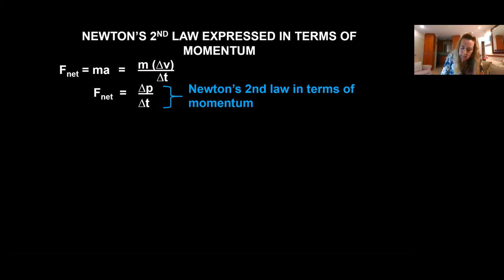because the rate of change of velocity is that change of velocity divided by the change in time. You can now see that the product of mass and change in velocity is change in momentum. I divide that by time and that, voila,